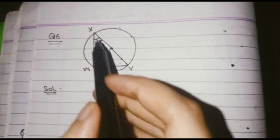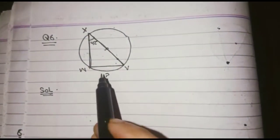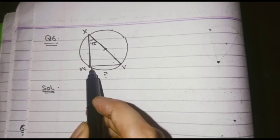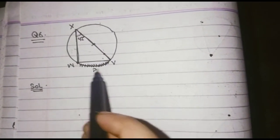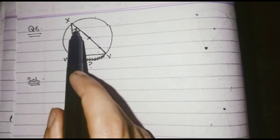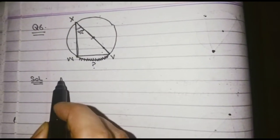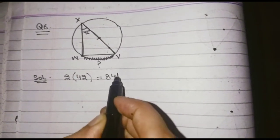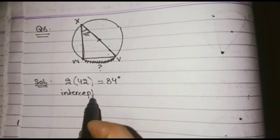In this question, the intercepted arc goes from here to here — that is our intercepted arc. We know that between the endpoints there is our inscribed angle and the intercepted arc. So if the inscribed angle is 42°, the intercepted arc will be double of 42°. Two times 42 equals 84, so our intercepted arc is 84 degrees.